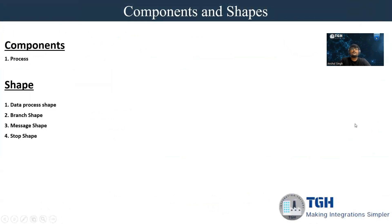The first thing is the components and shapes which are required. The mandatory component is a process, and the mandatory shape is a Data Process shape, which itself will hold a custom script. The rest of the shapes — like Message shape, Stop shape, and Branch shape — are optional. They can be used or not, depending on the interface of the process which we are building.